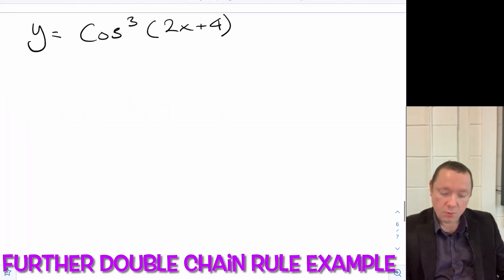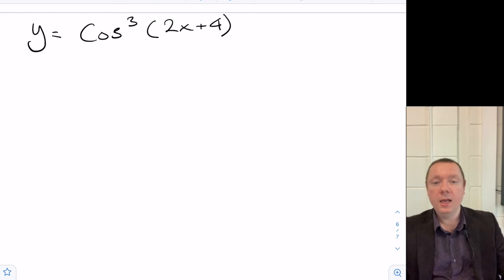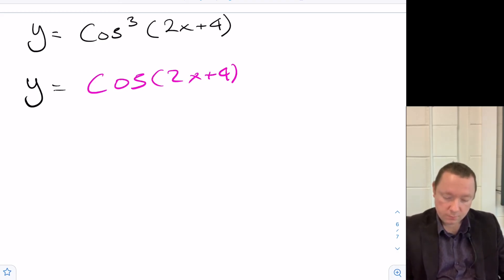Okay, one last example. y equals cos cubed (2x plus 4). We want to differentiate that. So let y equals [cos(2x plus 4)] cubed. But then the whole thing's being cubed.